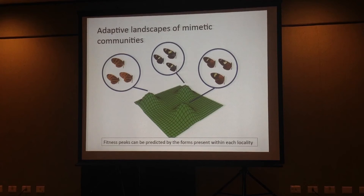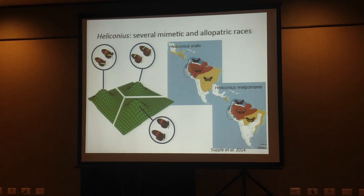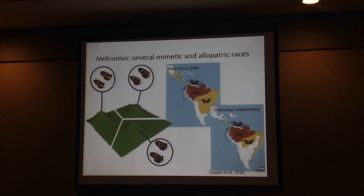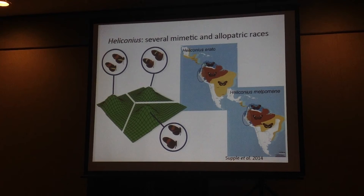In mimetic communities, you can find different warning signals, and those warning signals can represent the peaks of the adaptive landscape of mimetic communities. I work with butterflies, and usually you can find a large variety of warning signals within species. Here we can find the distribution of two of these species that are co-mimic, and we can see how they overlap. The important thing here is that usually in each of those localities, you only find one single signal.